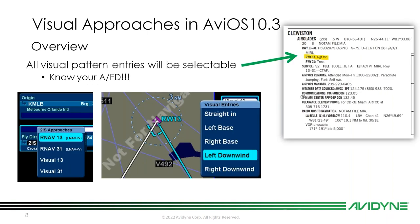All visual pattern entries will be selectable if you have visual approaches set up, so know your airport facilities diagram. For example, at Clewiston Airglades — India Sierra — if I'm doing a visual for runway 13, the AFD shows it is right traffic only. When you pull this up in the IFD, you'll see all visual entries available: straight in, left, right base, and downwind legs. Since runway 13 is right traffic, only the right-hand entries — right base, right downwind, or straight in — should be selected.